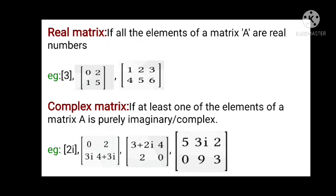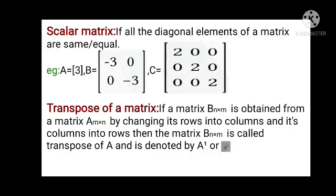Coming to the complex matrix: if at least one of the elements of matrix A is purely imaginary or complex, then it is said to be a complex matrix. If you see an 'i' in a matrix, then it is said to be a complex matrix.